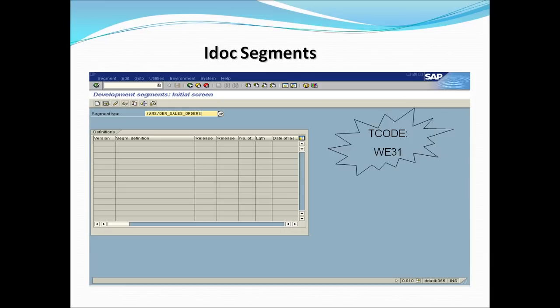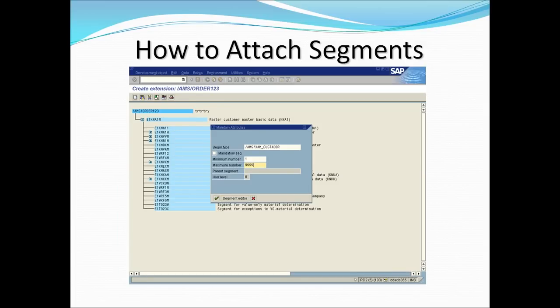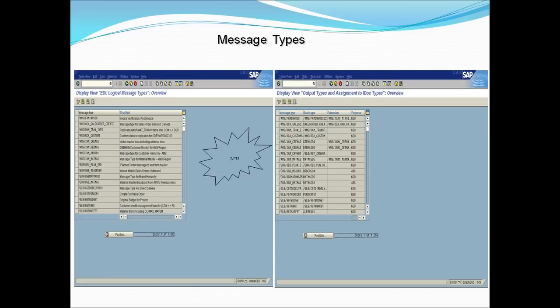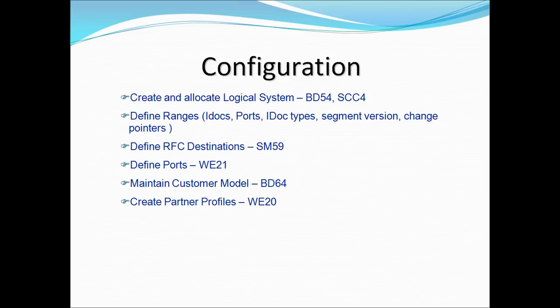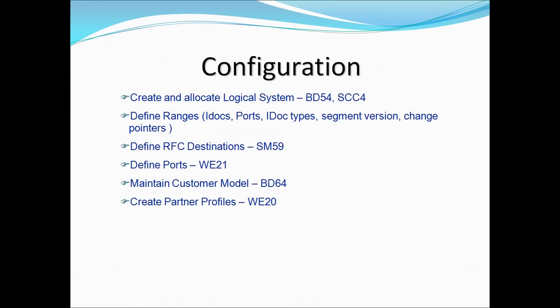There are certain T-codes used to create IDOC segments, IDOC types, and message types. Since this is a demo class, detailed attention won't be paid to these slides. Configurations include: creating a logical system, creating ports, RFC destinations, customer model, and partner profiles. To send an IDOC from system A to system B, you cannot send directly unless you have a connection to system B — that's why all these configurations are needed.